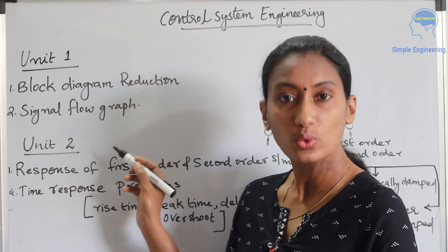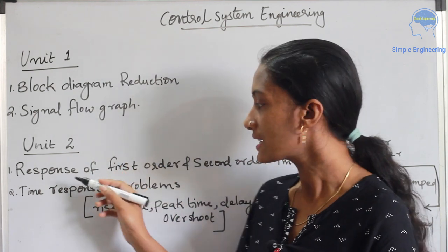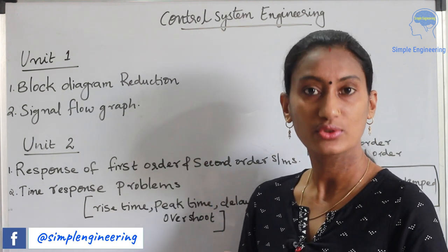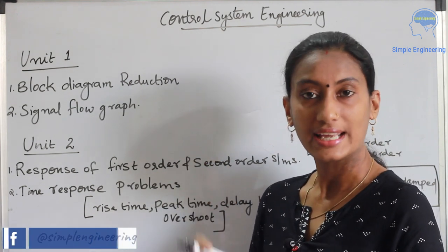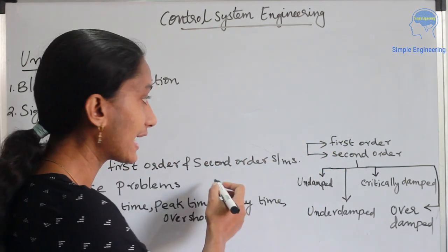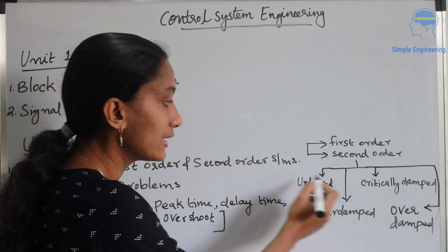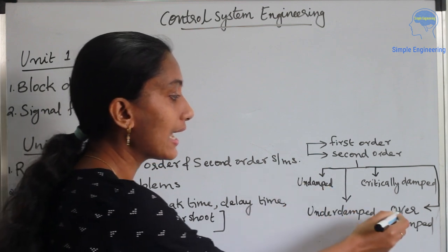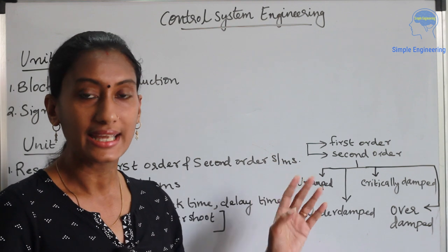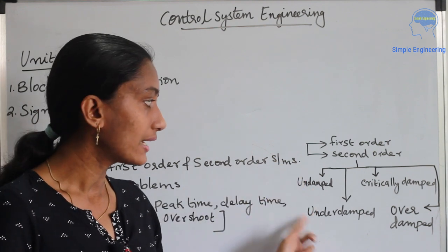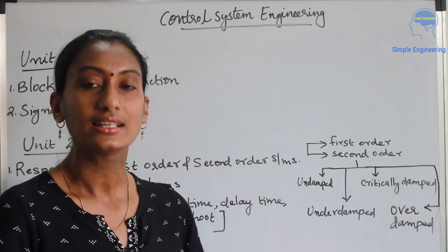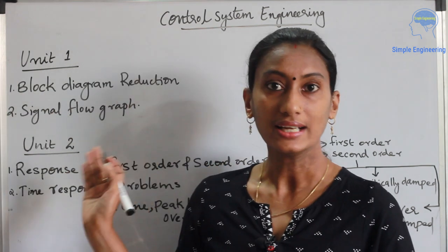In unit 2, you have the response of first order and second order systems. For the first order system, study the response, and for second order, there are four classifications: critically damped, undamped, underdamped, and overdamped. If you study first and second order systems, you can definitely answer the topics from unit 2.